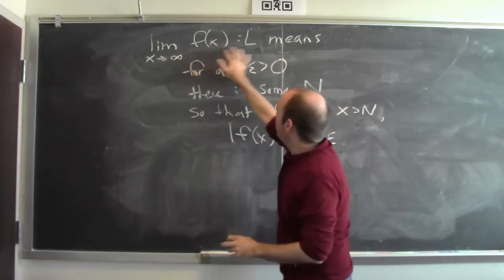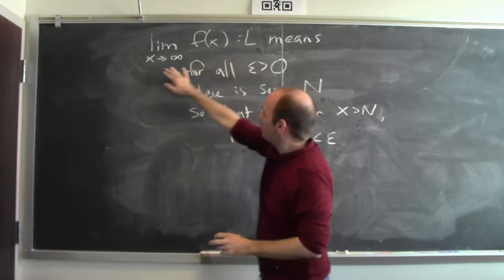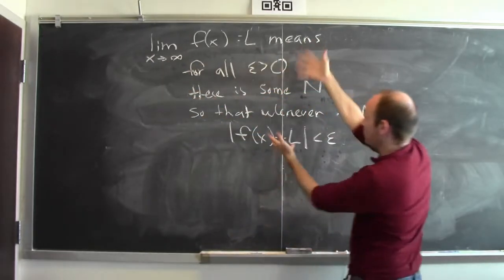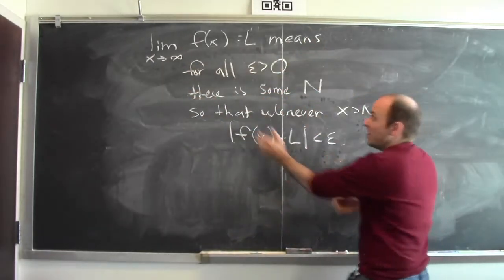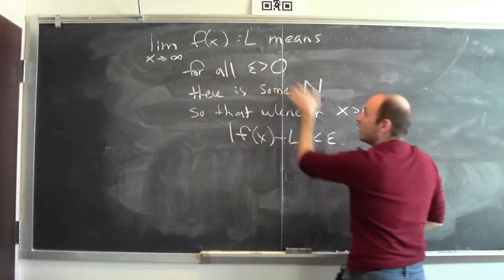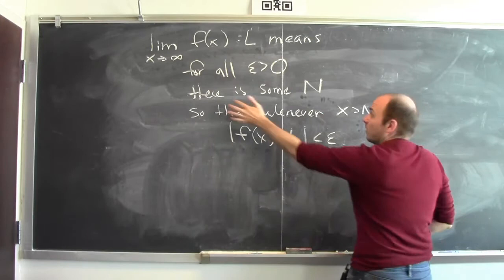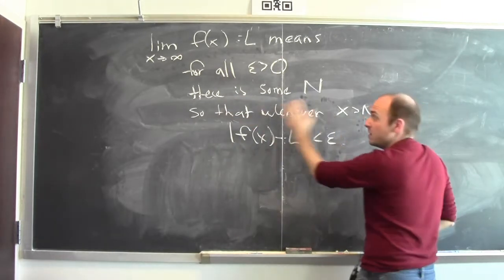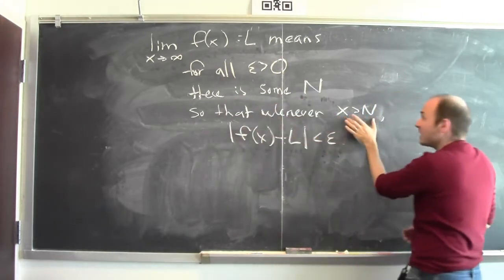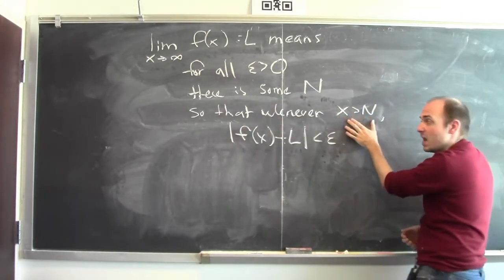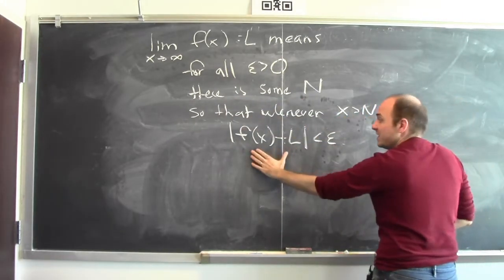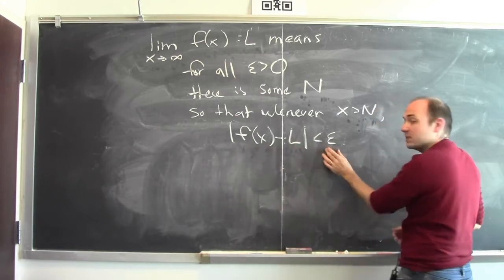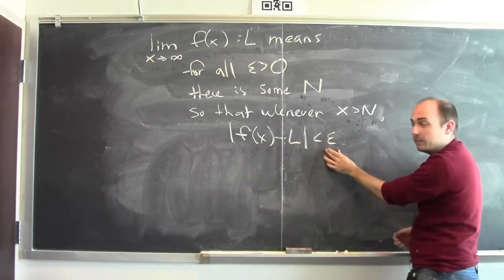To say the limit of f of x equals L as x approaches infinity means this: that for all epsilon greater than 0, there's some number N, so that whenever x is bigger than N, then the distance between f of x and L is less than epsilon.